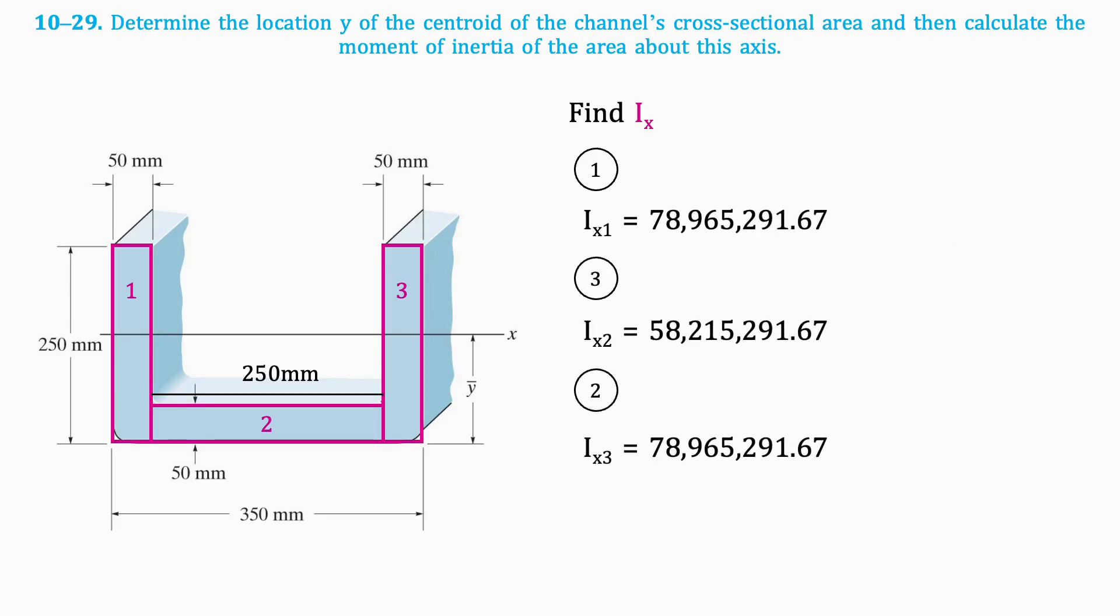Finally, to find the total moment of inertia, we just add the moments of each section together. We can multiply the first value by 2, since the moment of inertia for sections 1 and 3 is the same. This results in around 216 million, which can be simplified to the following answer.